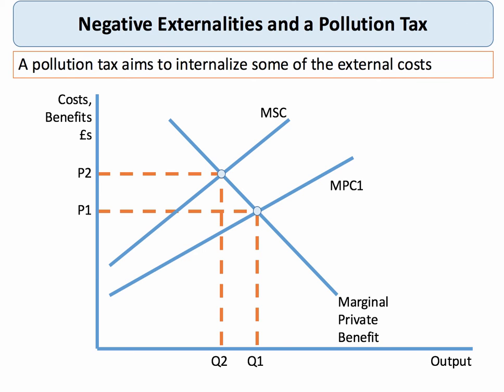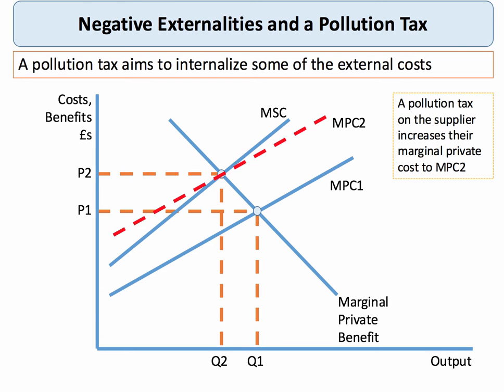We go back to our diagram, back to the idea of a pollution tax. Keep in mind that with a negative externality the marginal social cost is greater than the marginal private cost. The free market equilibrium output is Q1, where private costs and benefits are equated, whereas the social equilibrium we'd like to get to is Q2, which takes into account the external costs of production. So with a pollution tax — if we assume it's a tax on the supplier, for example a carbon tax on an airline or a farmer polluting their fields using organophosphates.